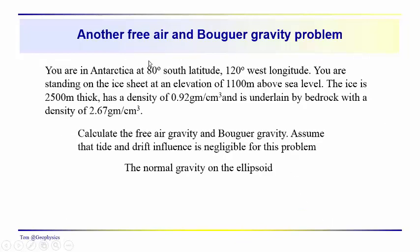Here's another problem. Say you're in Antarctica at 80 degrees south latitude, 120 degrees west longitude. You're standing on an ice sheet at an elevation of 1,100 meters above sea level. The ice is 2,500 meters thick with a density of 0.92 grams per cubic centimeter, and the ice sheet is underlain by bedrock with a density of 2.67 grams per cubic centimeter. Calculate the free air gravity and the Bouguer gravity, assuming tide and drift are negligible.